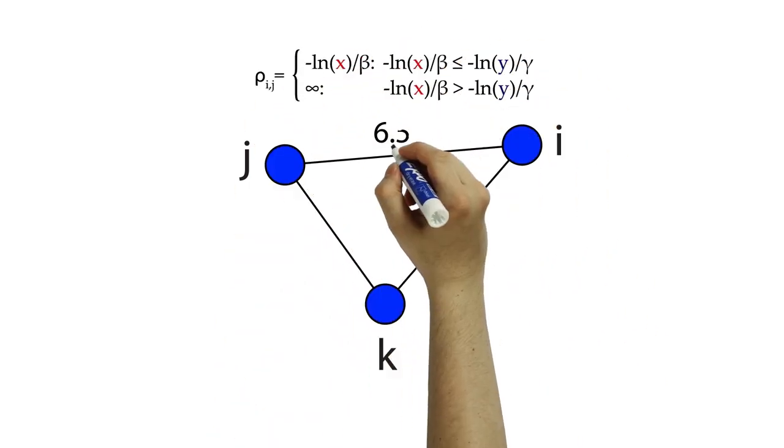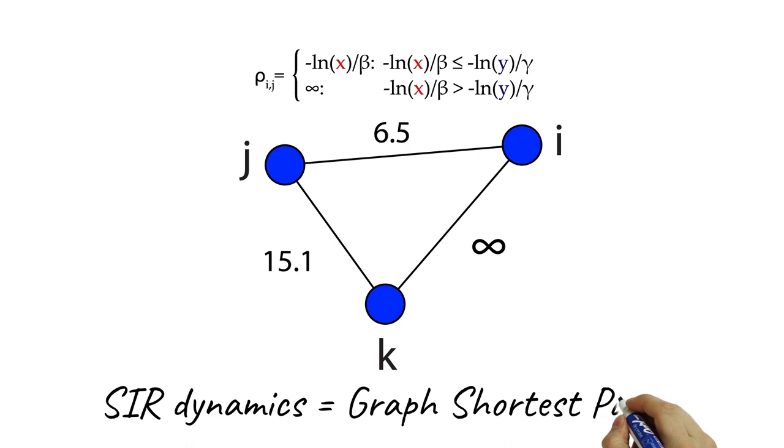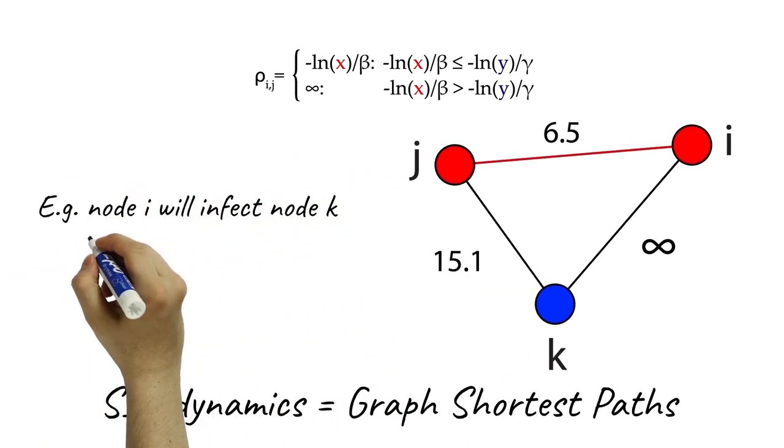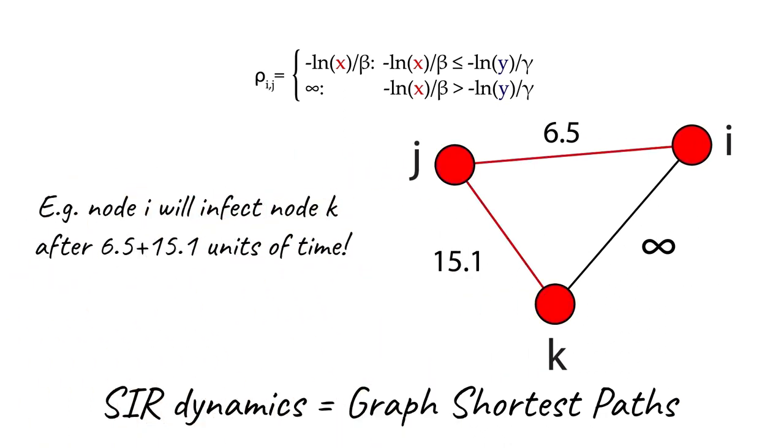This gives a network with random edge weights. The shortest path length between nodes is equivalent to the epidemic spreading time between them.